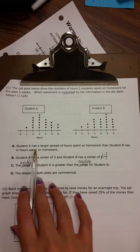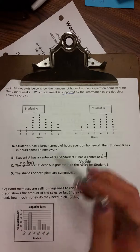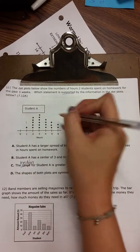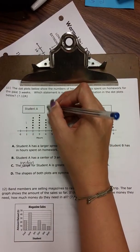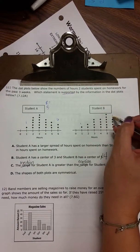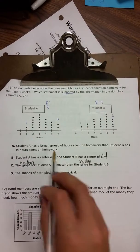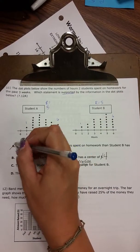A says student A has a larger spread of hours than student B. So let's see, the spread goes from one to six. That's a spread of five or range of five. And then we go from one to six here, which is the same range of five. So to say that one has a larger, that's not true.